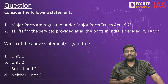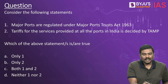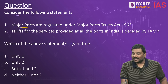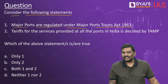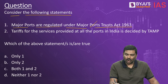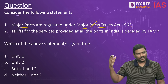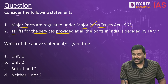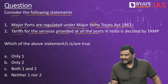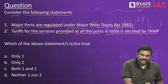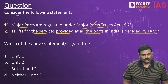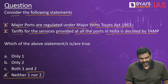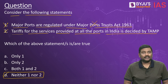Practice question: Statement 1 — Major ports are regulated under the Major Port Trust Act of 1963. Wrong — it is now the Major Ports Act of 2021. Statement 2 — Tariffs for services at all ports in India are decided by TAMP. Also wrong — TAMP has been replaced by MPAB, and it only covered major ports, not all ports. Right answer: Option D — neither one nor two.